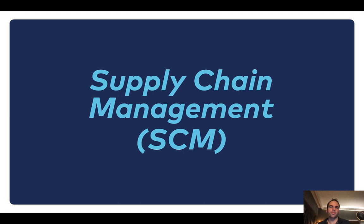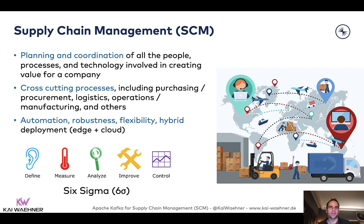Supply chain management is a huge and complex topic. It's all about planning and coordination, and not just about technology, but also about people and processes. These processes are cross-cutting — it's about purchasing, procurement, logistics, and so on. More and more of that has to be automated to be competitive, and this is not just about new cloud applications but really about edge and cloud. This is a continuous process, and Six Sigma is one of the patterns used here to define, measure, analyze, improve, and control supply chains. It's really complex and involves not just inside a company but also third parties and partners.